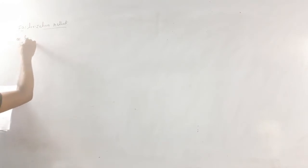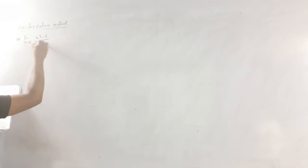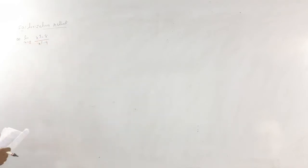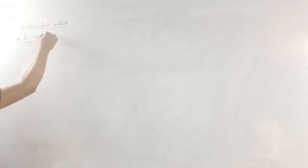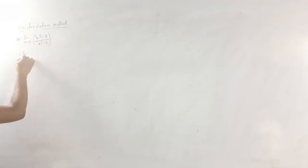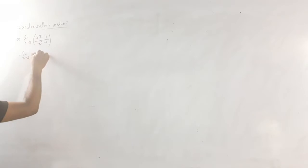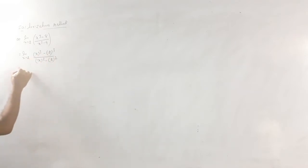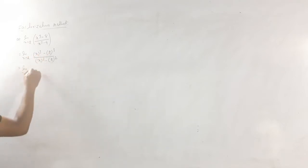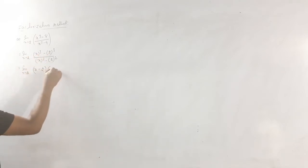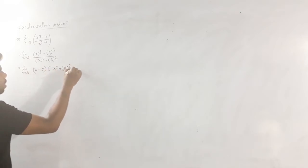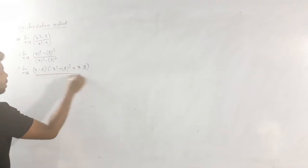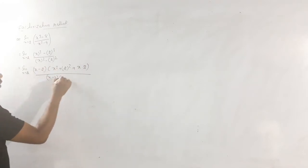Next question: limit x tends to 2, x cubed minus 8, divided by x squared minus 4. Direct substitution: 2 cubed minus 8 equals 0, and 2 squared minus 4 equals 0, so 0 by 0 form. Factorize: apply a³ minus b³ formula to get (x minus 2)(x² plus 2x plus 4), and denominator as (x minus 2)(x plus 2). Cancel (x minus 2).